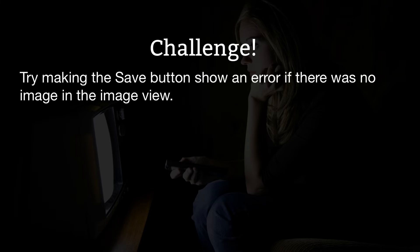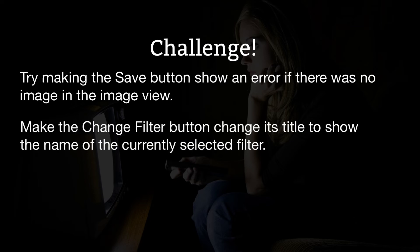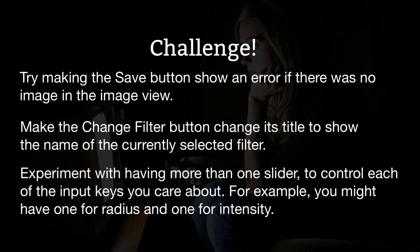One of the best ways to learn is to write your own code as often as possible, so here are three ways you can put your newfound knowledge to use straight away. First, try making the save button show an error message if there was no image loaded in the image view. Second, try making the change filter button change its title to show the name of the currently selected filter. Third, try something bigger — experiment with having more than one slider to control each of the input keys you care about; for example, you might have one for radius and one for intensity.